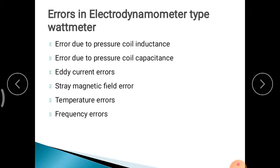Stray magnetic field error: any external magnetic or electrostatic field near the instrument affects the device. Since the magnetic field of the meter is weak, external fields can cause deflection and show wrong readings. To avoid this, shielding is used.